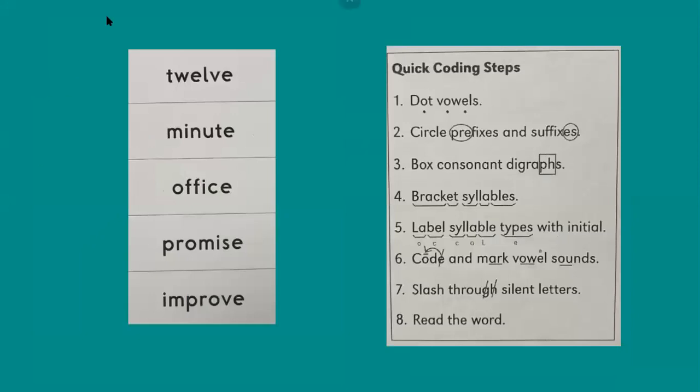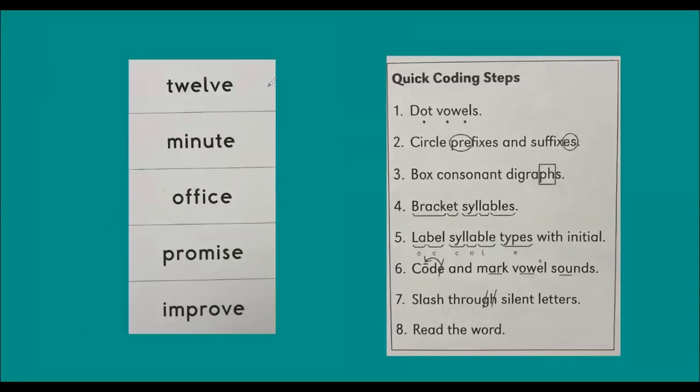The first word, twelve. We are going to mark the vowels. The syllables. It's one syllable, twelve. And then we are going to label our syllable type. It's a closed syllable. And we're going to label our vowels. This is silent. And so this is not a long E. This is a short E. And then you say the word twelve.